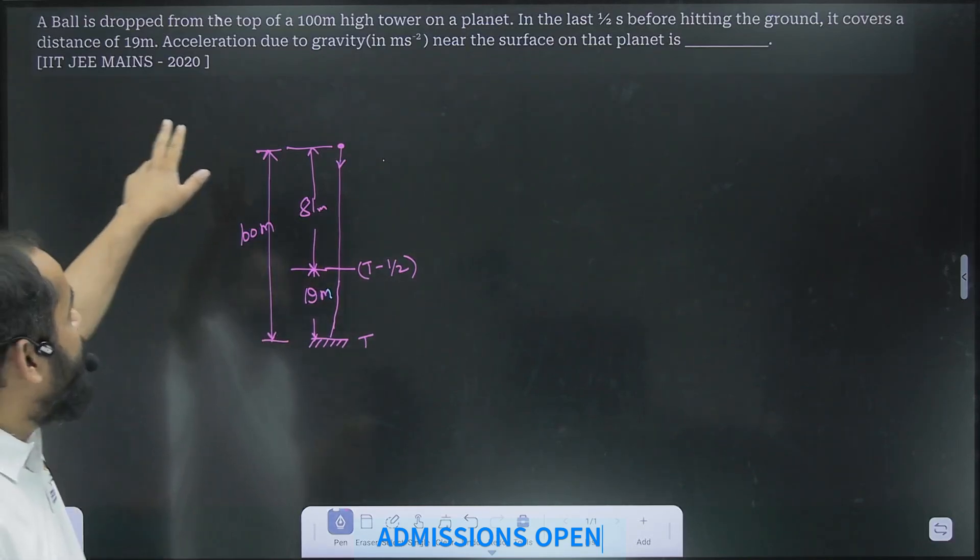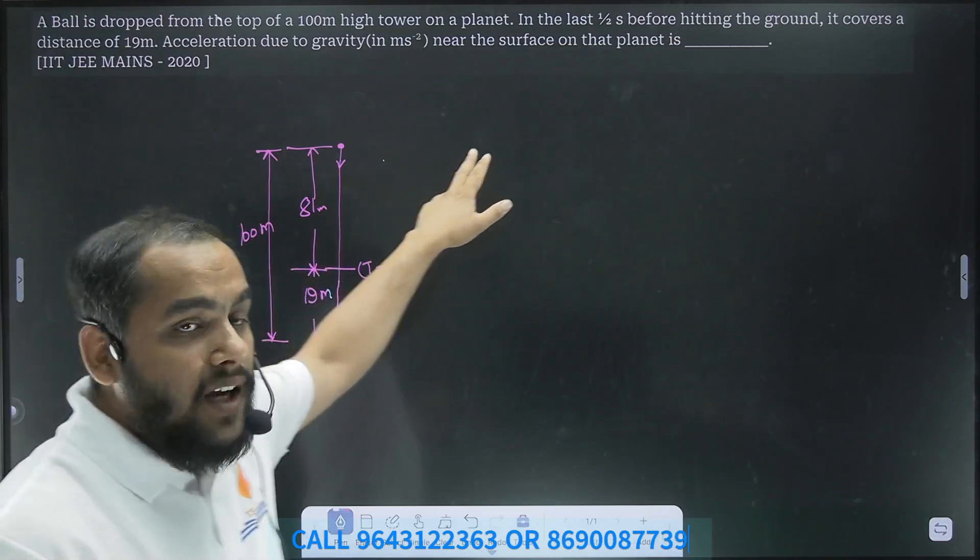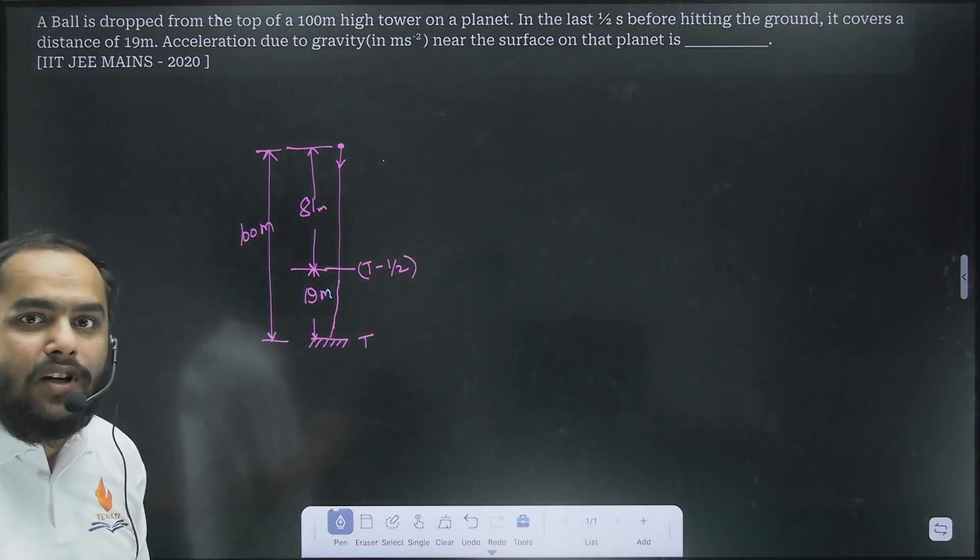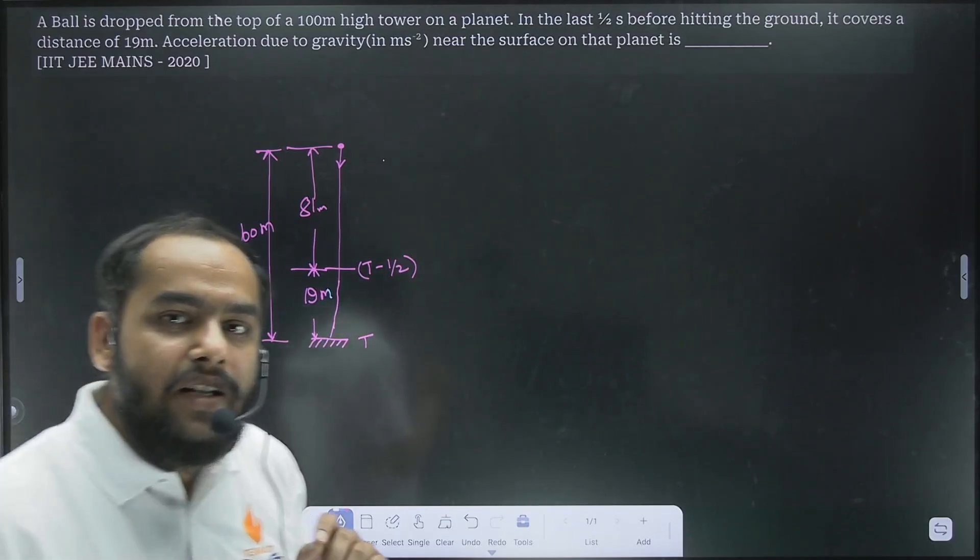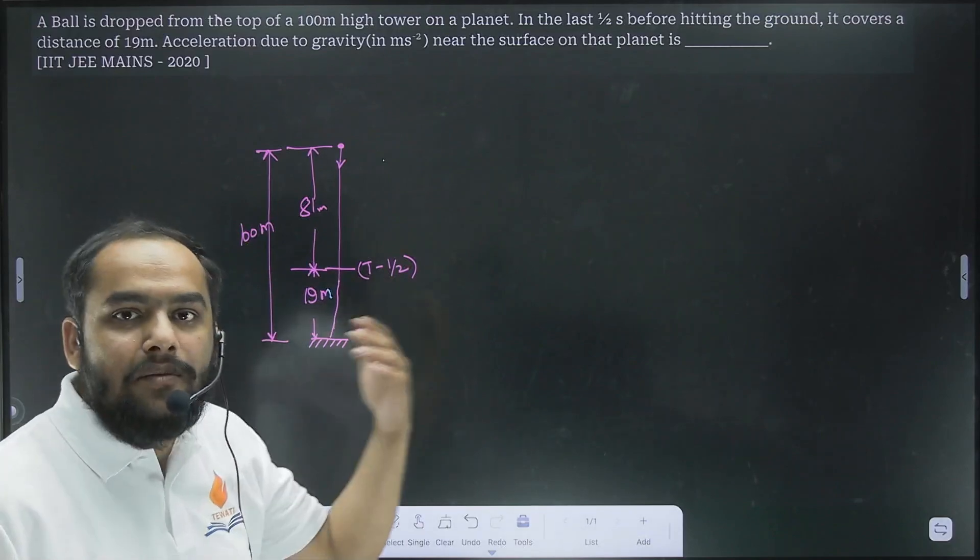A ball is dropped from the top of a 100 meter high tower and in the last half second before hitting the ground it travels 19 meters. We are asked to find the acceleration due to gravity because this is not on earth, this is some other planet.